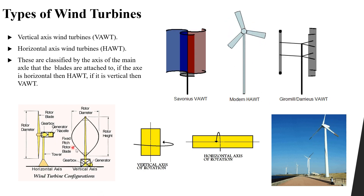Looking at the components: for the horizontal axis wind turbine, we have rotor blades and the distance from one blade tip to the other is called the rotor diameter, and it is attached to a generator to generate electricity. For the vertical axis wind turbine, the distance from top to bottom is called rotor height, and the generator is located down here at the base.